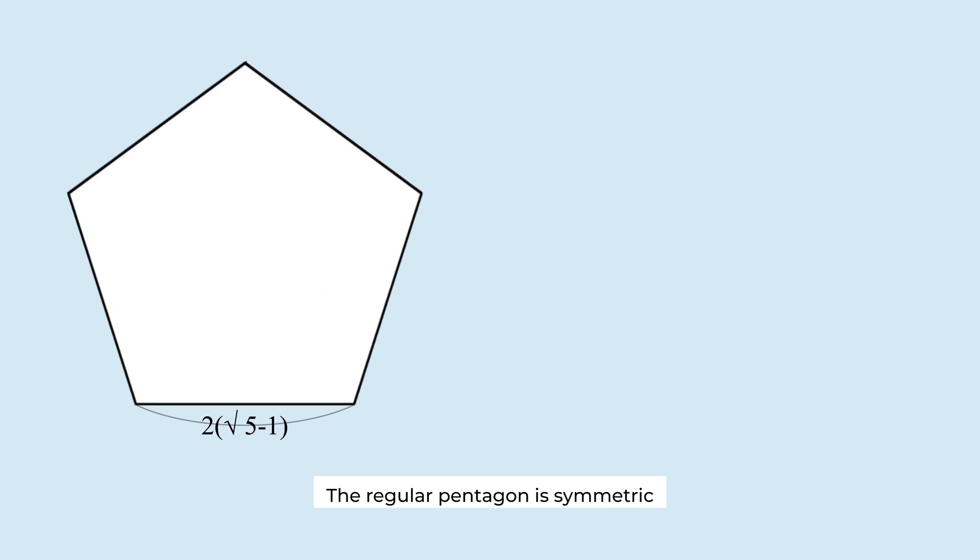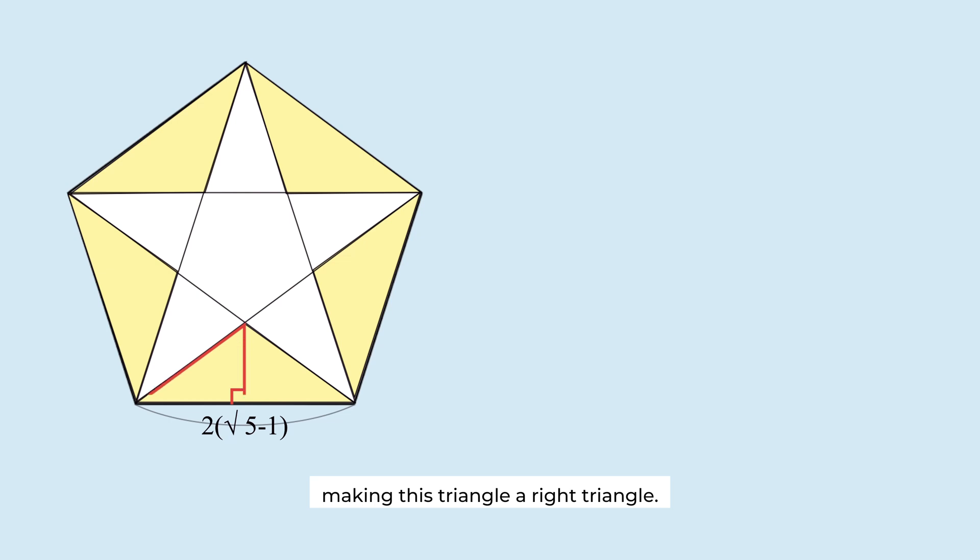The regular pentagon is symmetric about this axis. This angle is a right angle, making this triangle a right triangle. Since we know this length, we just need to find this length, which is the height.